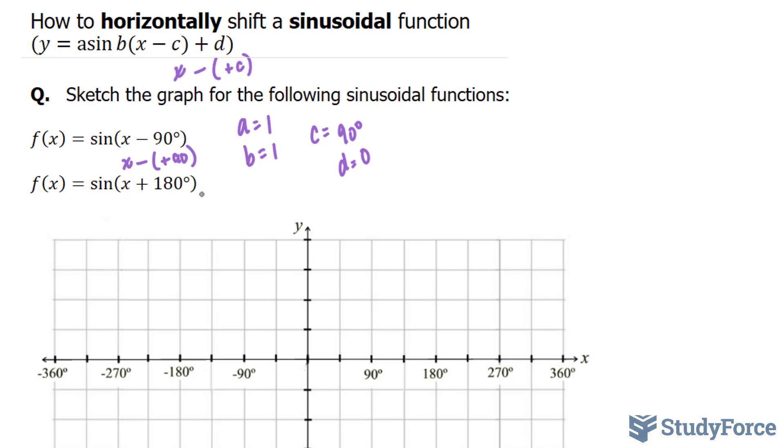The c value in this function, on the other hand, is negative 180. Why? Because remember, this has to model this template, and this template has x minus c. So in this case here, you would have to rewrite it as x minus negative 180. So this would serve as your c value.